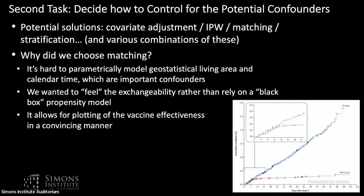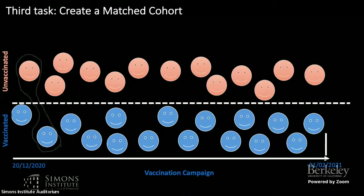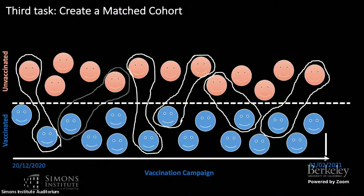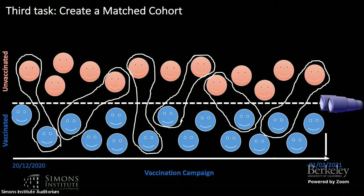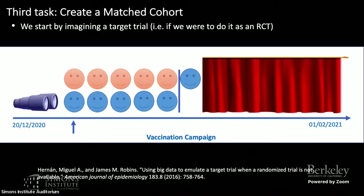We also wanted figures like those from the Pfizer phase three trial showing the clear separation between vaccinated and non-vaccinated, to persuade people the vaccine works in a real-world setting. Creating a matched cohort is not trivial. We can't simply take people who got vaccinated and people who didn't — this involves looking into the future and causes selection bias. Instead, you need to think like you're running an RCT: on each day, match the newly vaccinated to an unvaccinated control without knowing what will happen tomorrow.